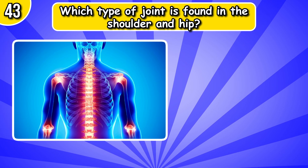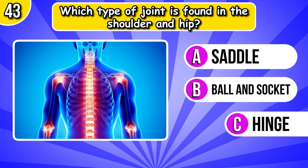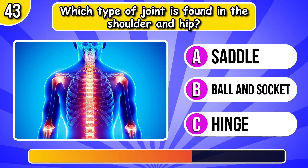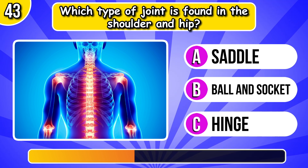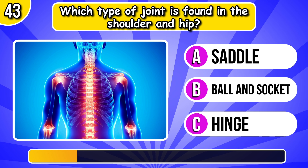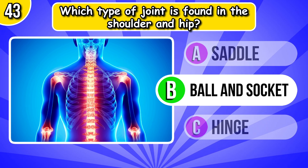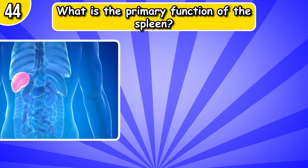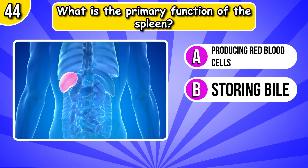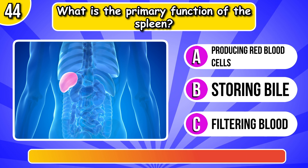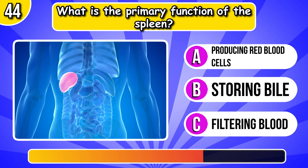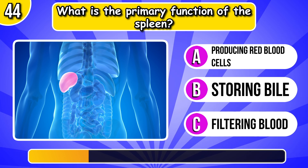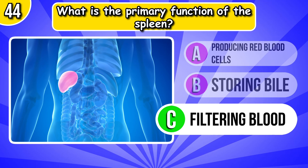Which type of joint is found in the shoulder and hip? Ball and socket joint. What is the primary function of the spleen? Filtering blood.